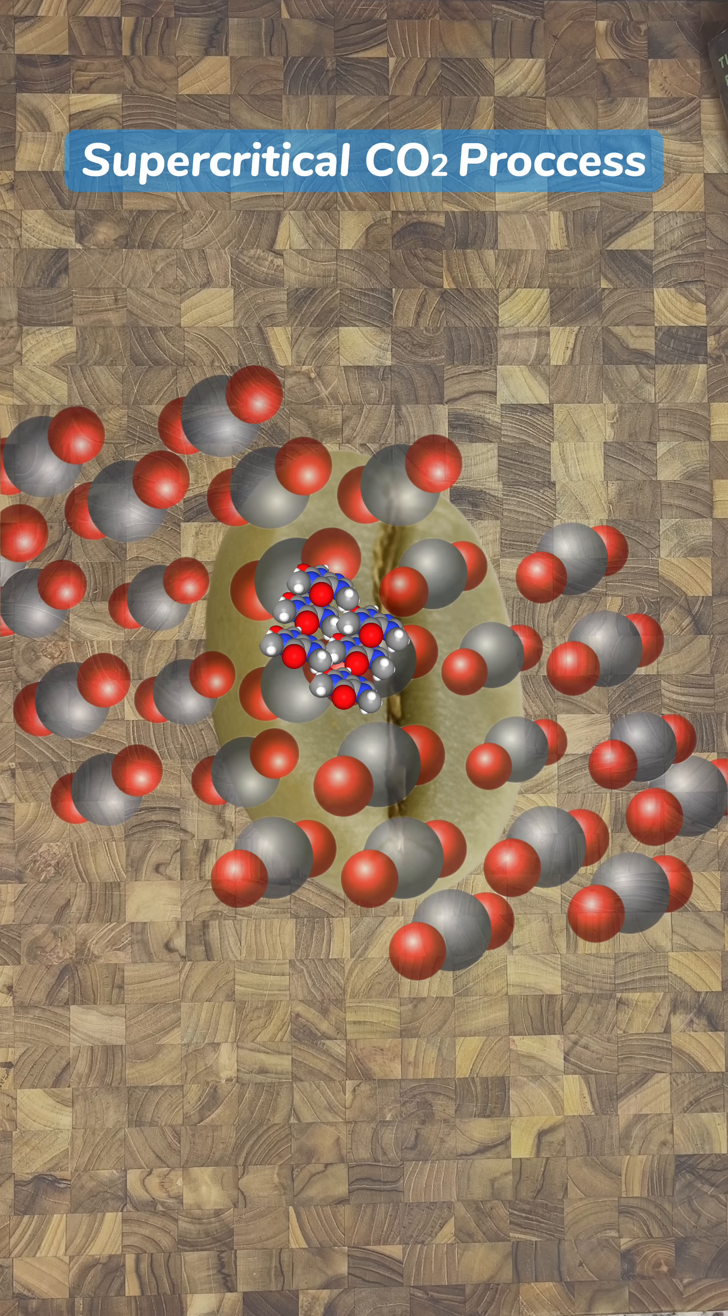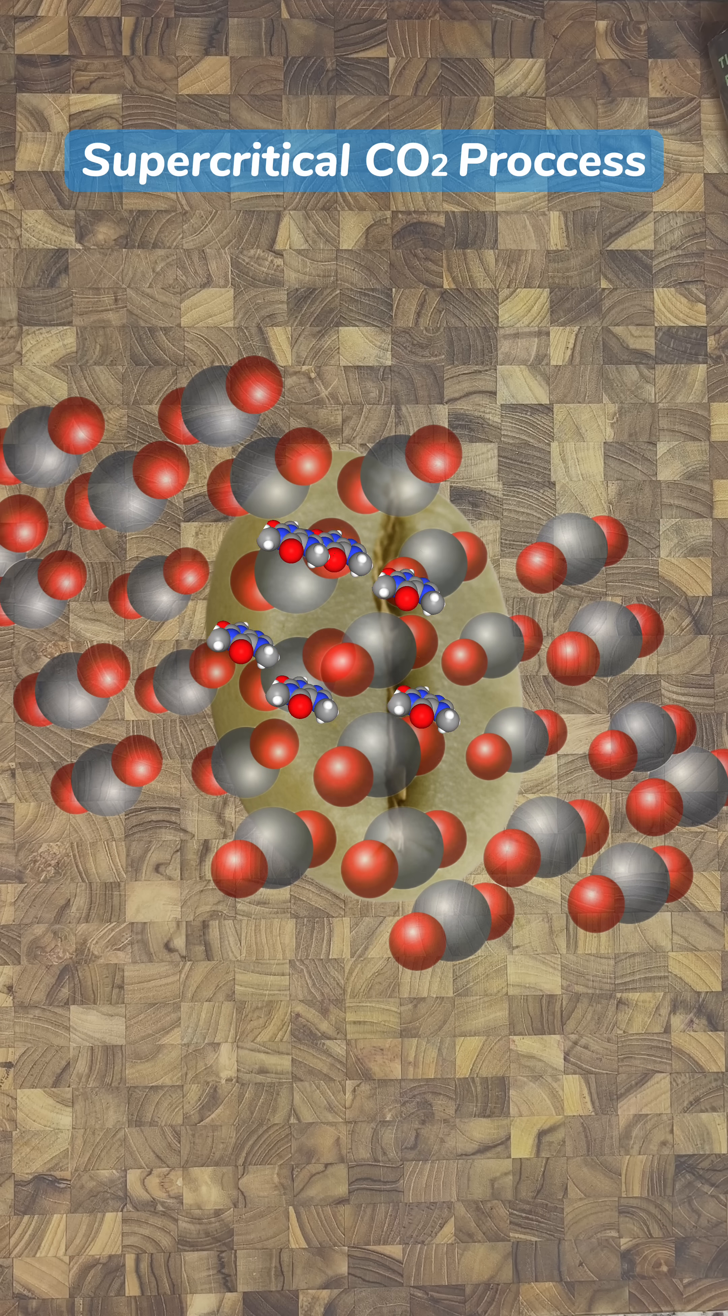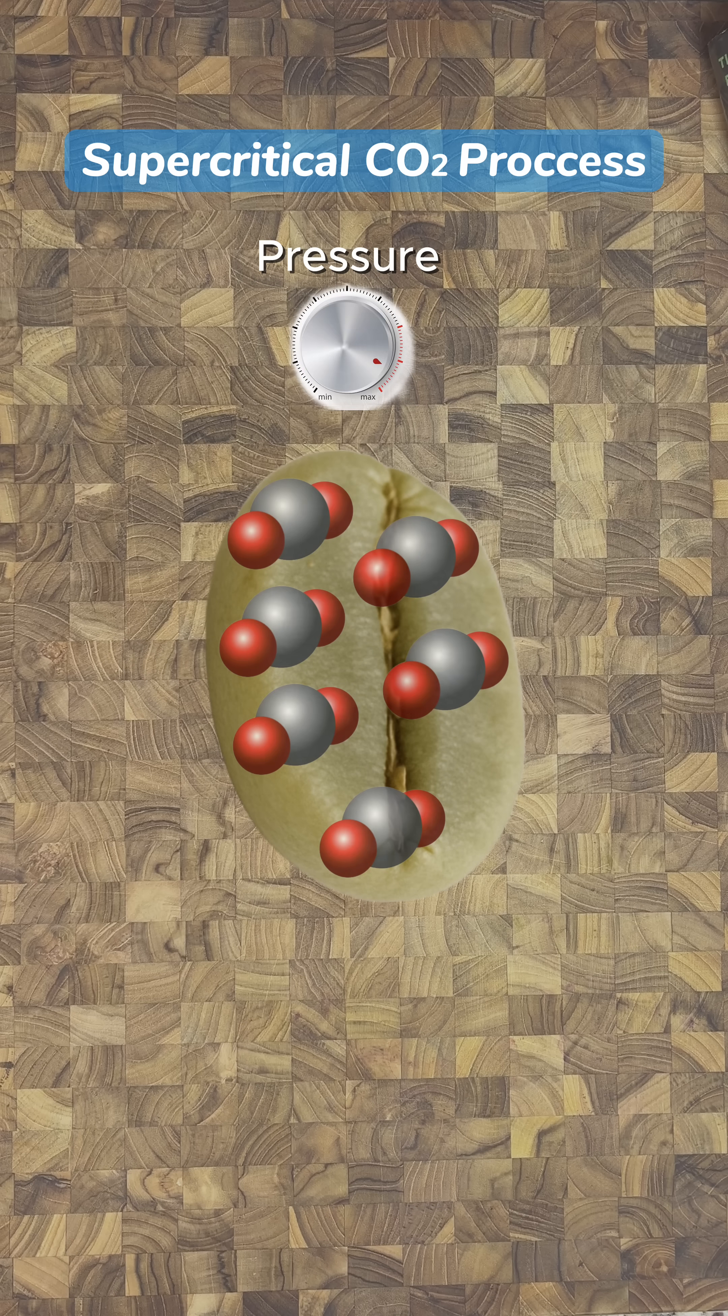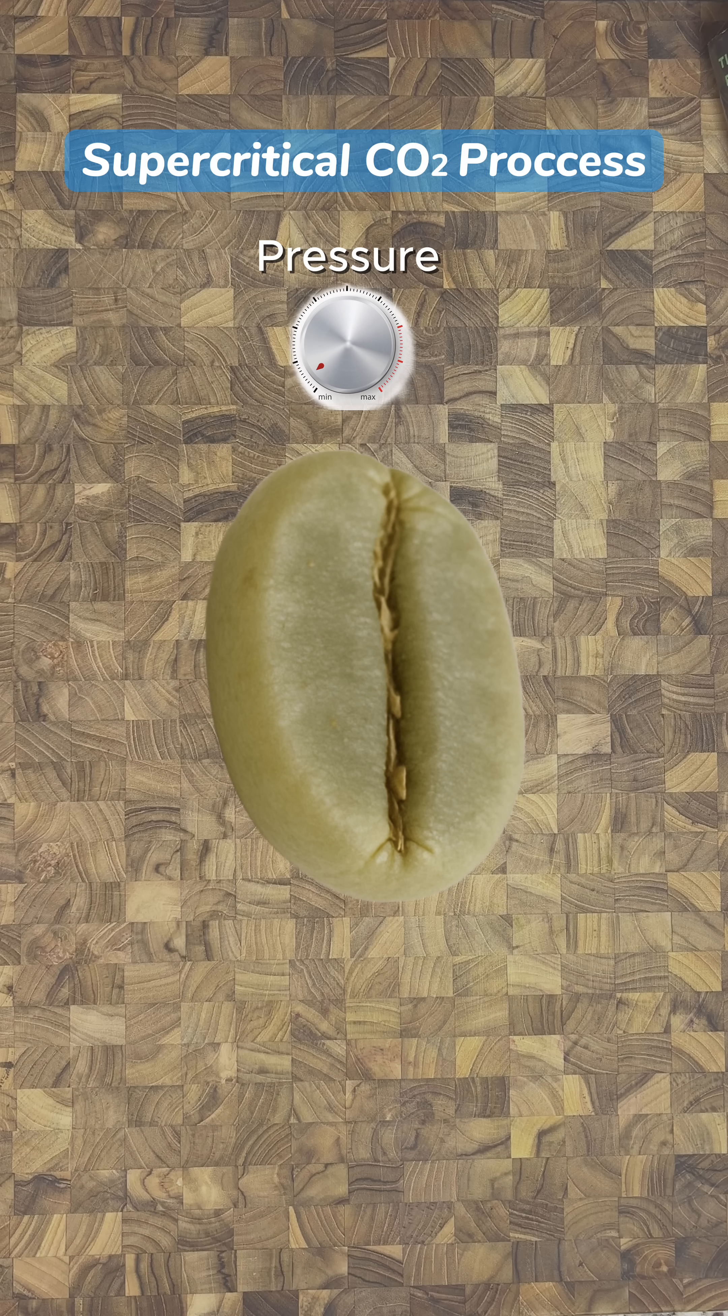Moistened green coffee beans are exposed to the supercritical CO2 that carries away the caffeine, which can be recollected for other uses. When depressurized, the CO2 leaves the bean residue-free.